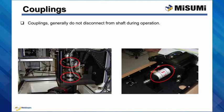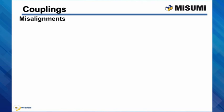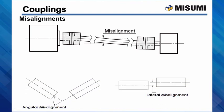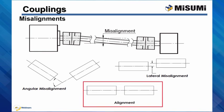Couplings in general do not disconnect from shafts during operation, unless we are using torque-limiting couplings. By careful selection, installation, and maintenance, couplings protect expensive machine elements from sudden, excessive, and unexpected loads by breaking or disconnecting. When connected shafts are misaligned, forces are generated and these forces can produce great stresses on rotating and stationary components. Depending on application, design, and surrounding environment, it is not always possible to completely isolate shaft misalignments. Using couplings helps achieve optimum alignment conditions in machinery.